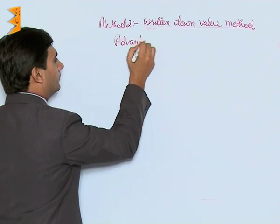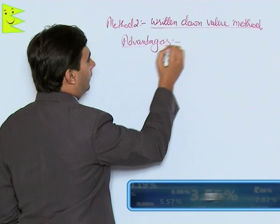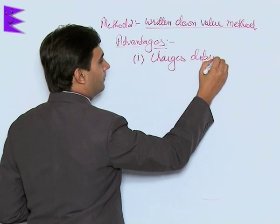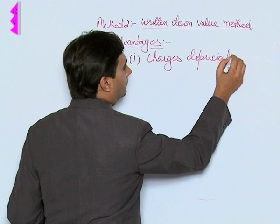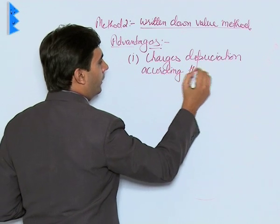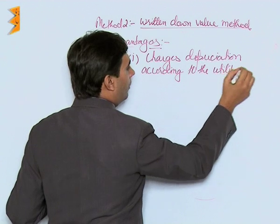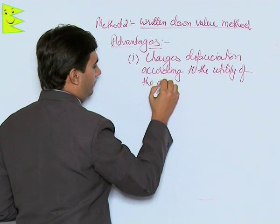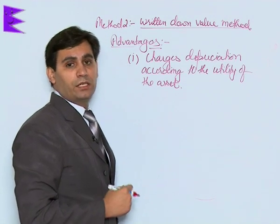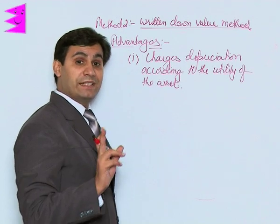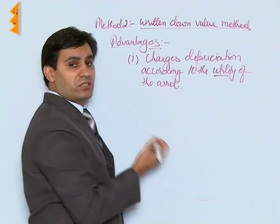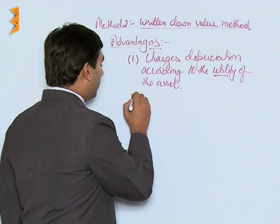Now the advantages of this method. The first advantage is that it charges depreciation according to the utility of the asset. In the initial years, when the asset has higher utility, depreciation is charged at a higher amount — the rate is the same, but the amount comes out to be higher than in the subsequent years. Since the utility is higher, the depreciation is also higher.